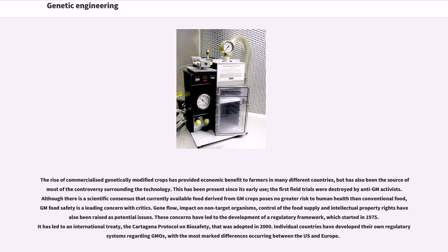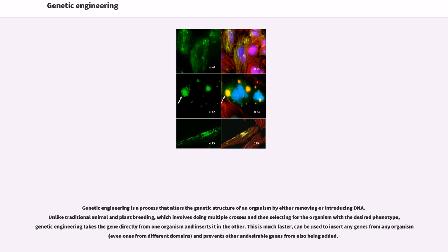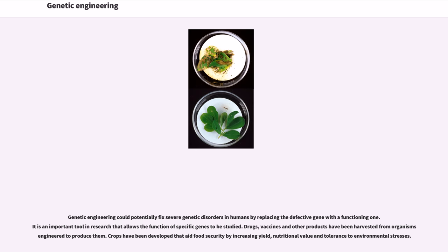Genetic engineering is a process that alters the genetic structure of an organism by either removing or introducing DNA. Unlike traditional animal and plant breeding, which involves doing multiple crosses and then selecting for the organism with the desired phenotype, genetic engineering takes the gene directly from one organism and inserts it in the other. Genetic engineering could potentially fix severe genetic disorders in humans by replacing the defective gene with a functioning one. It is an important tool in research that allows the function of specific genes to be studied. Drugs, vaccines, and other products have been harvested from organisms engineered to produce them. Crops have been developed that aid food security by increasing yield, nutritional value, and tolerance to environmental stresses.